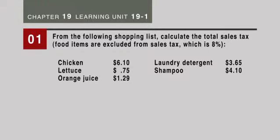Welcome back everybody. We're in Chapter 19, so let's look at 19-1 Practice Quiz. From the following shopping list, we're going to calculate the total sales tax. Food items are excluded from the sales tax, which is 8%. Keep in mind that every state has different amounts for sales tax.